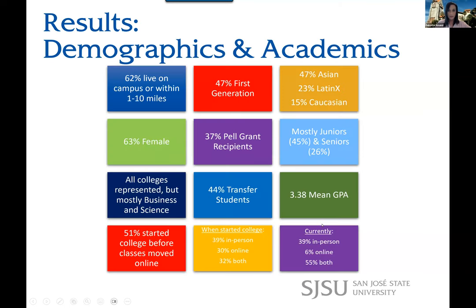Looking at the demographics: most of the students lived on campus or within one to ten miles. Most were not first-generation. The majority of students were 47% Asian, followed by 23% Latinx and 15% Caucasian. Most were female, mostly juniors. Most students were from business and science, although the survey was sent all across campus. We had 44% transfer students, so most were not transfer students.